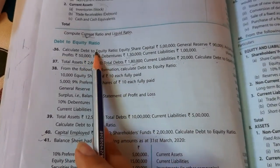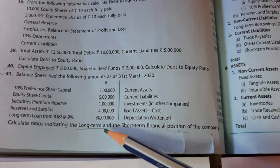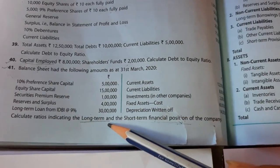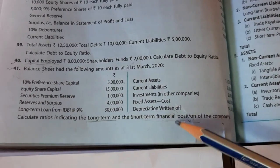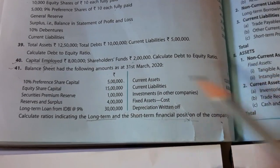Debt-to-equity ratio is used for the long-term financial position of the company.